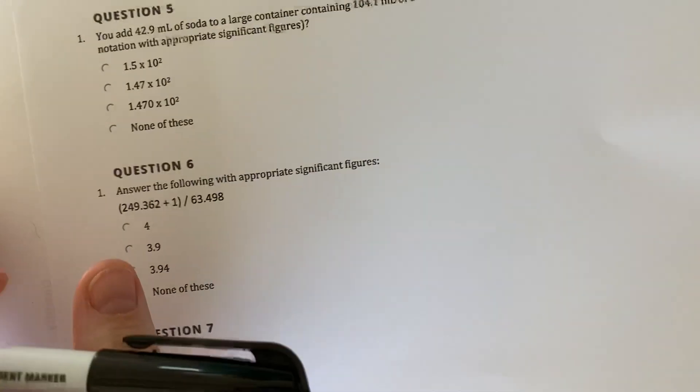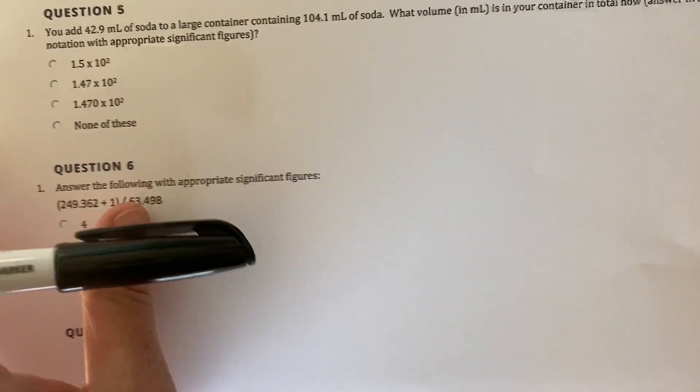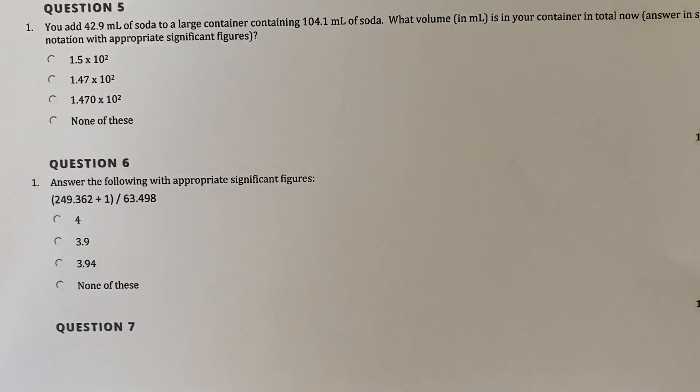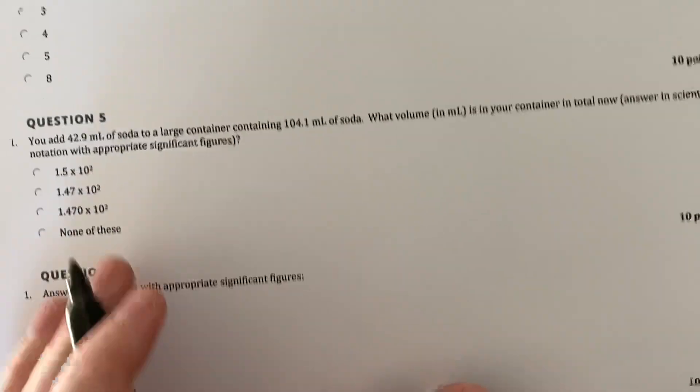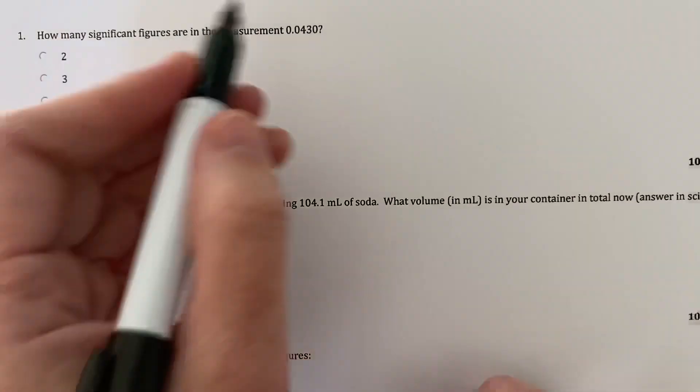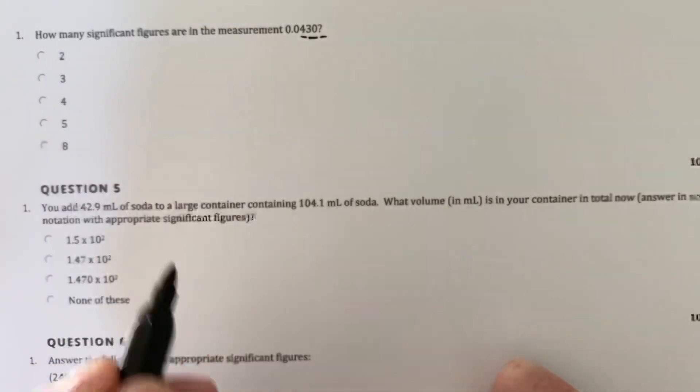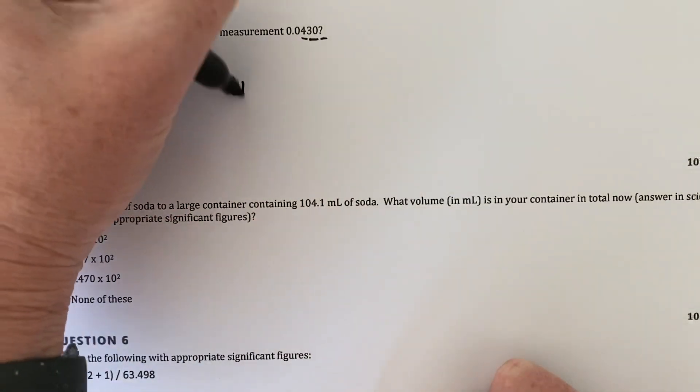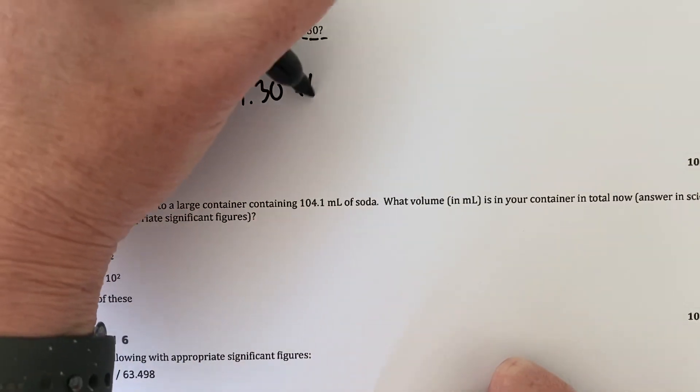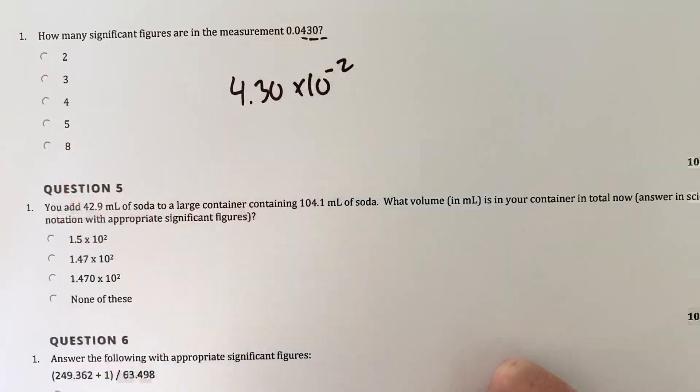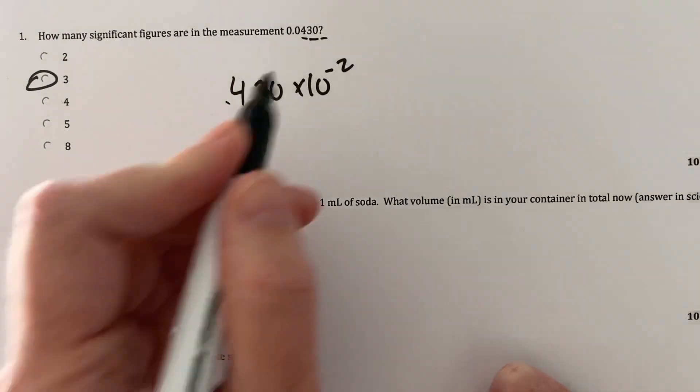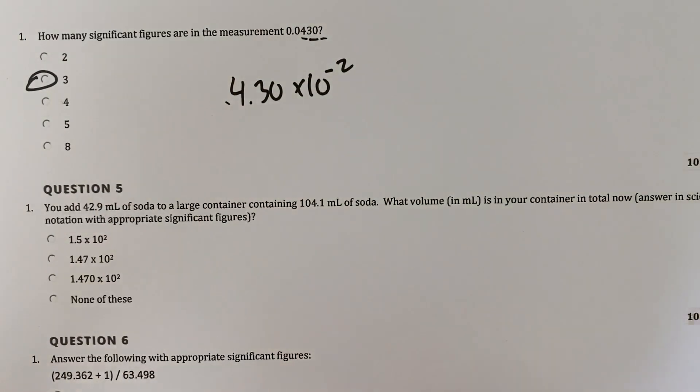Next question is, how many sig figs are in the measurement? 0.430. This is essentially just testing your knowledge of sig figs here. So zeros before numbers never count, and here we got 1, 2, 3. Another quick way to do it is just put this number in scientific notation, which would be 4.30 times 10 to the negative 2. And this has 1, 2, 3 numbers in it. So another way to do it. Remember zeros after the decimal, as long as there is a decimal, or after the number, as long as there's a decimal included, are significant.